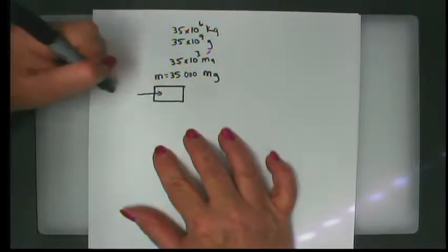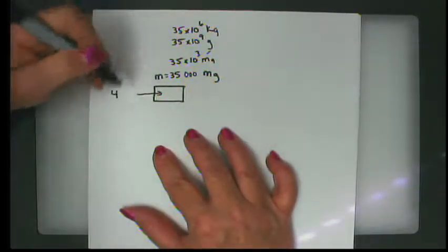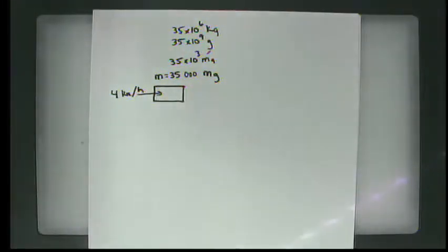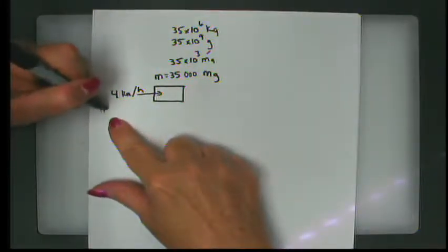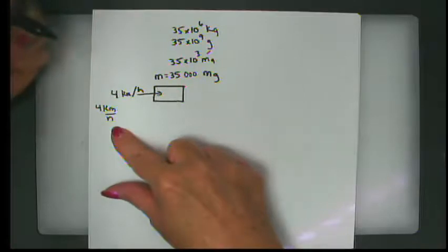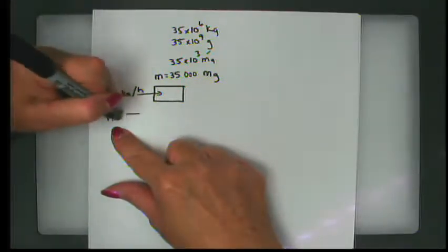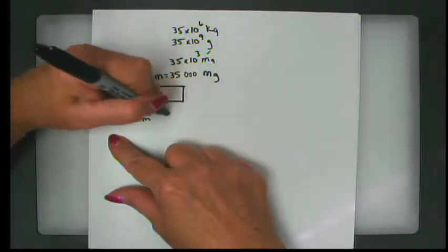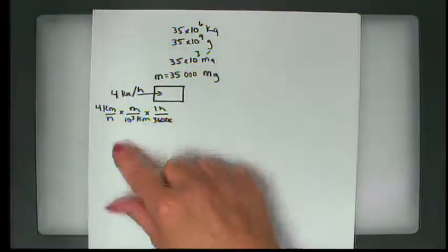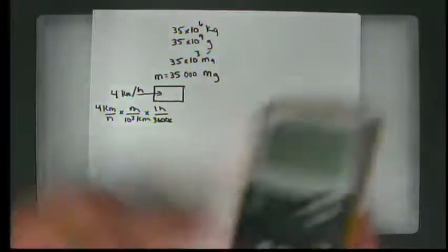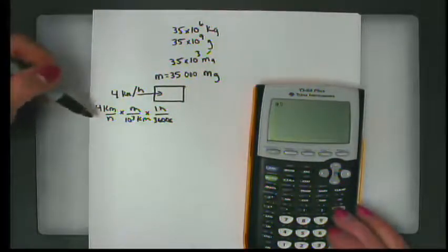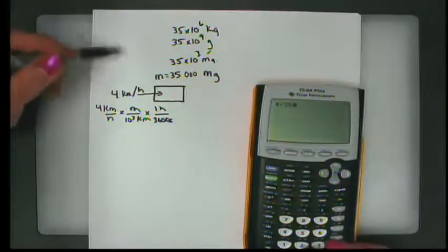The ocean liner has an initial velocity of 4 kilometers per hour. We'll want to change it into meters per second. So we use 10 to the third kilometers per meter and 3600 seconds per hour. Doing the math, we get 4 divided by 3600...